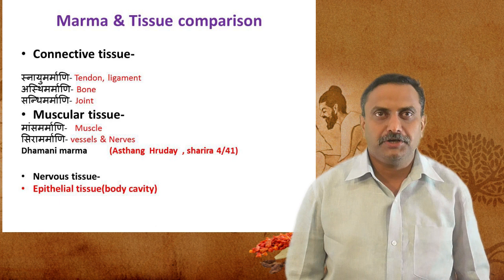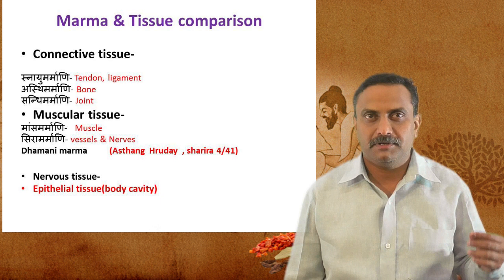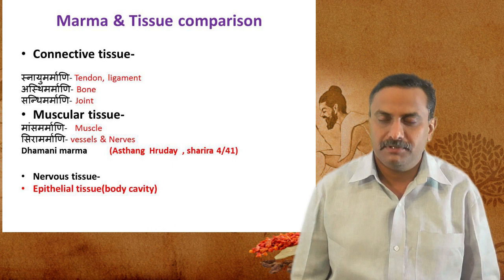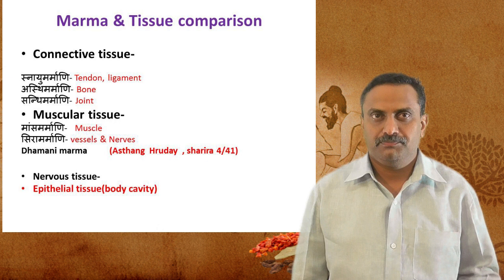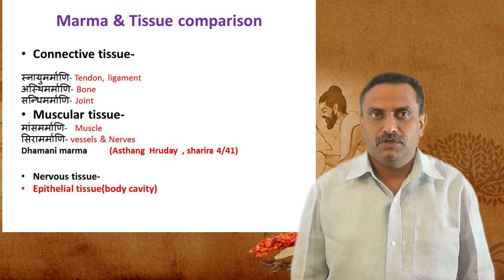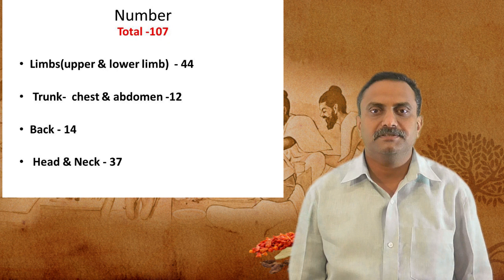In Marma and tissue comparison: connected tissues include Snayu Marma, Asthi Marma, and Sandhi Marma, which can be compared with tendon, ligament, bone, and joint. Muscular tissue corresponds to Mamsa Marma, and vessels and nerves correspond to Sira Marma. In Ashtanga Rudaya, Sharira Sthan fourth chapter, Damani Marma is also explained and can be compared with blood vessels. The total number of Marmas is 107.